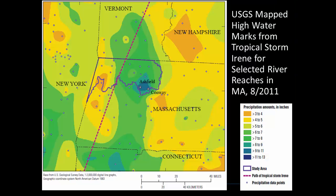The impacts to the built environment and public service sectors experienced during heavy rainfall events like Tropical Storm Irene have highlighted the need to build resiliency into roadway, railroad, and utility infrastructures. Tropical Storm Irene produced devastating flooding in Massachusetts, Vermont, and locations all along the east coast.